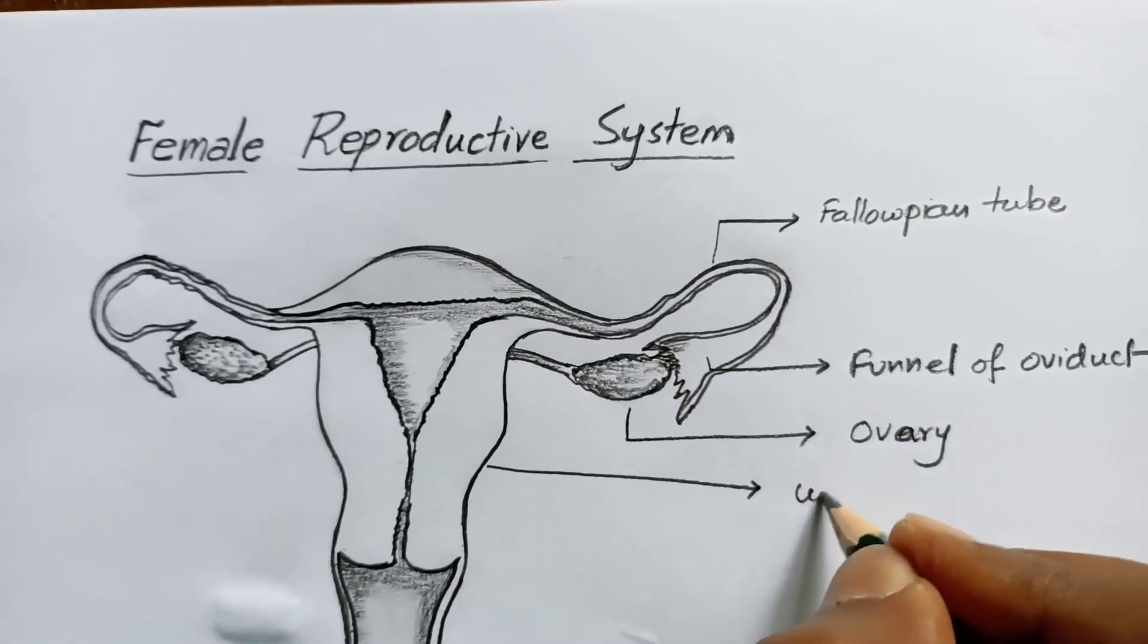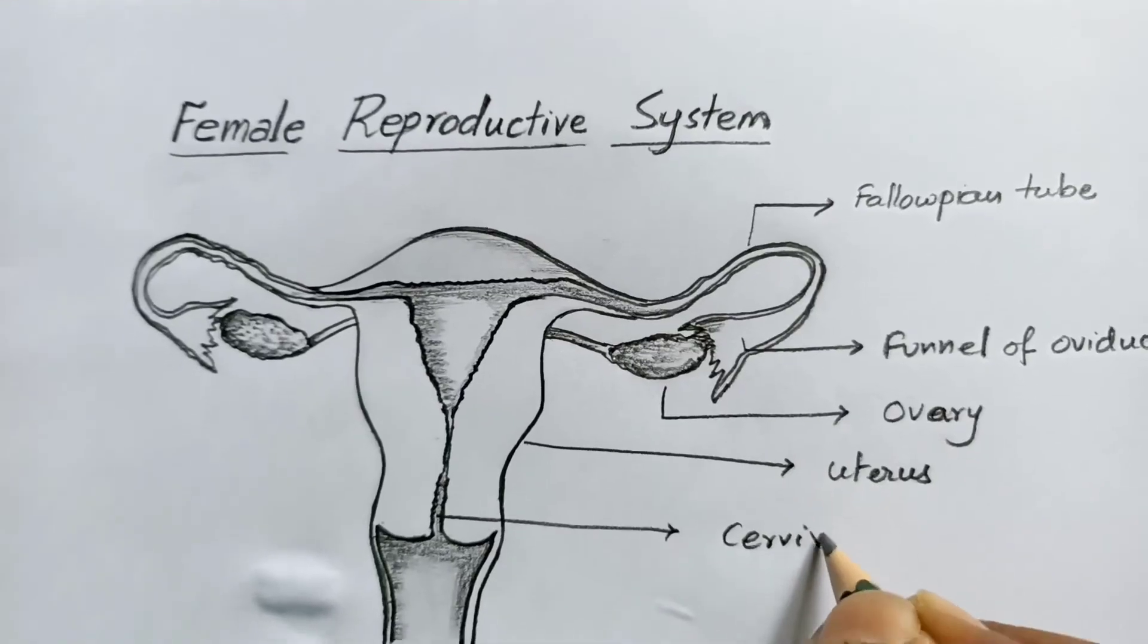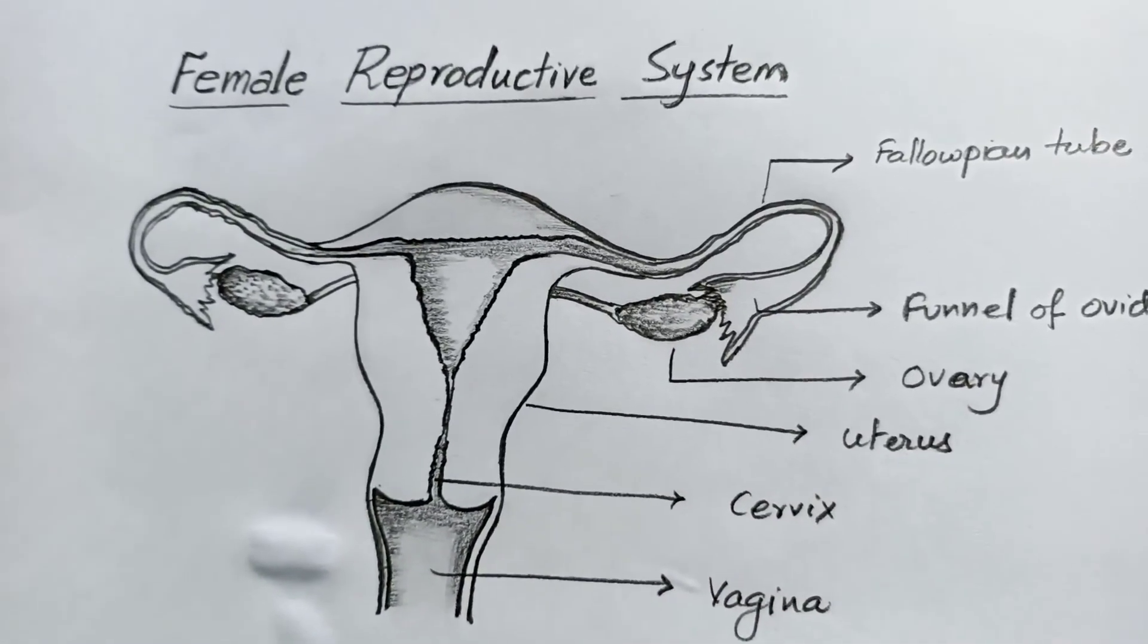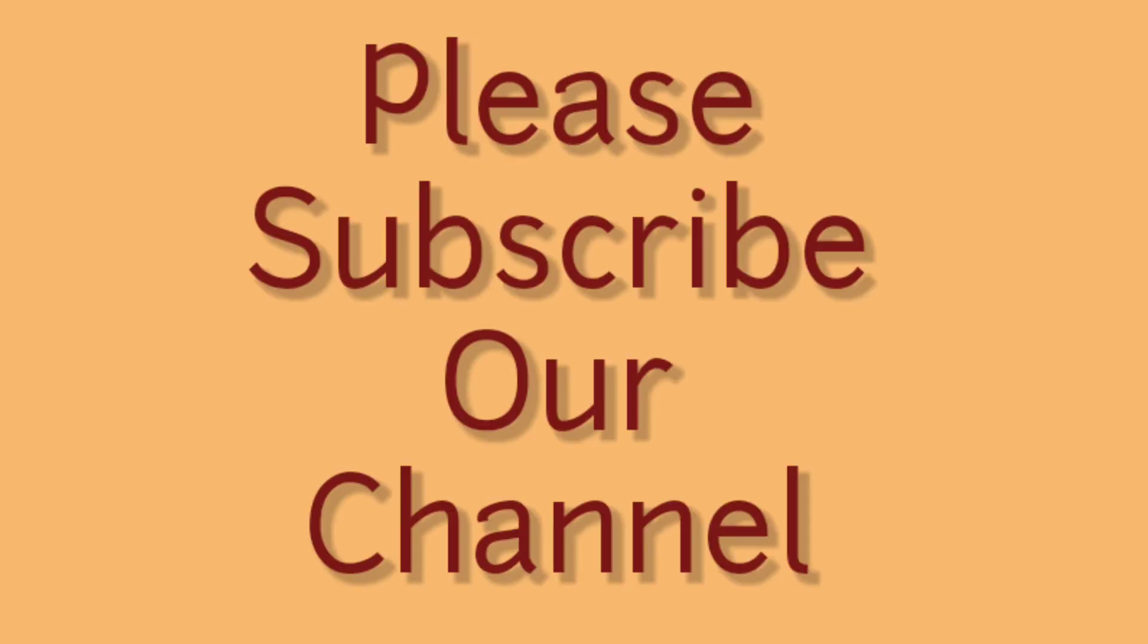This is the uterus, which is in pear shape. This is the cervix, this is the vagina. It's a simple diagram. Thank you for watching. Hope you like this. Please subscribe to my channel. Thank you.